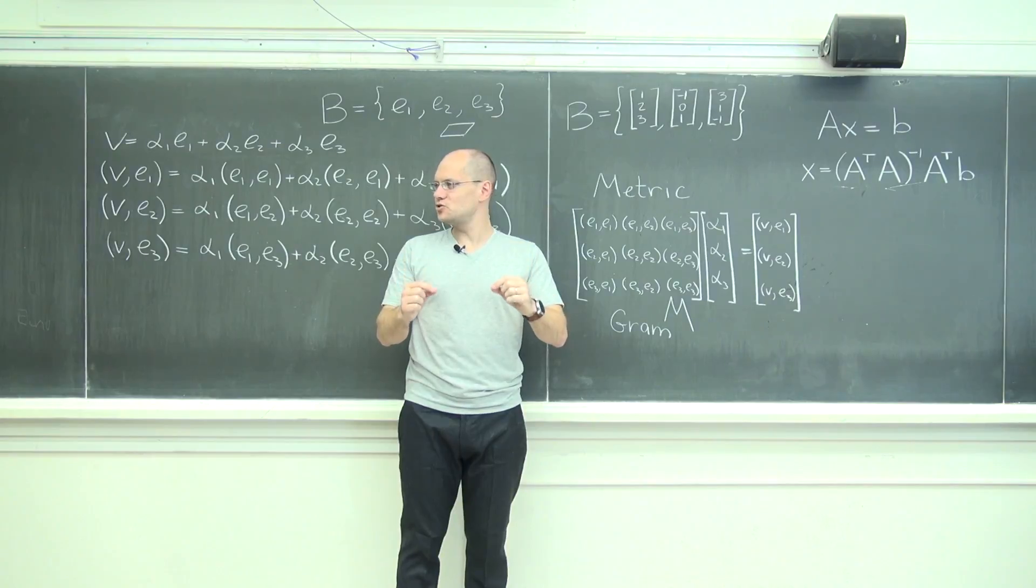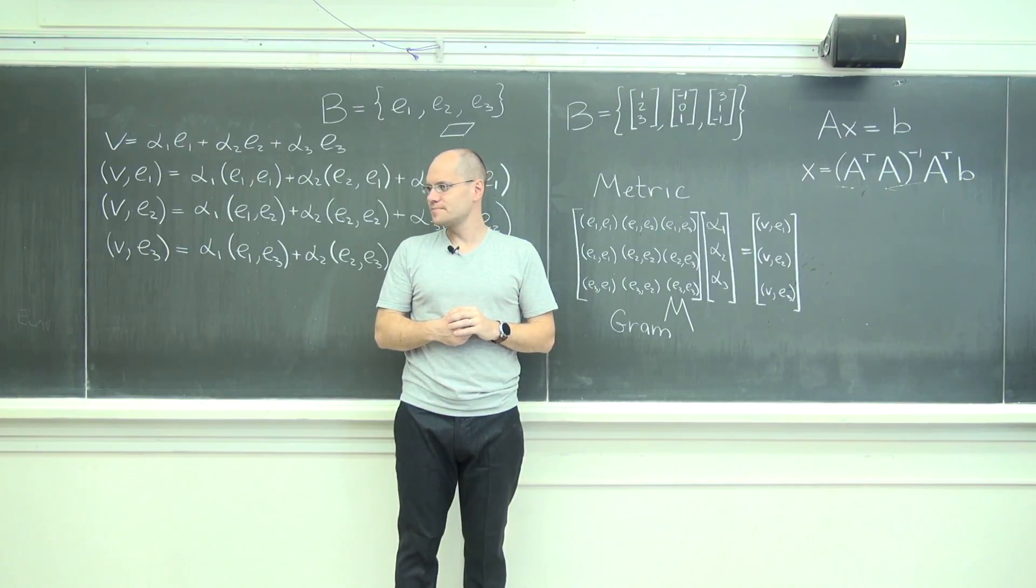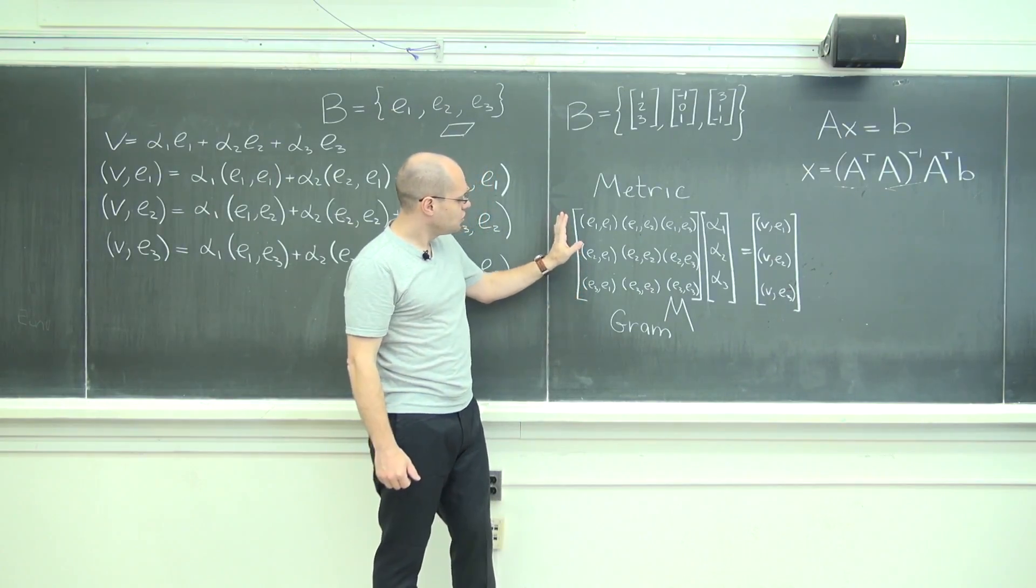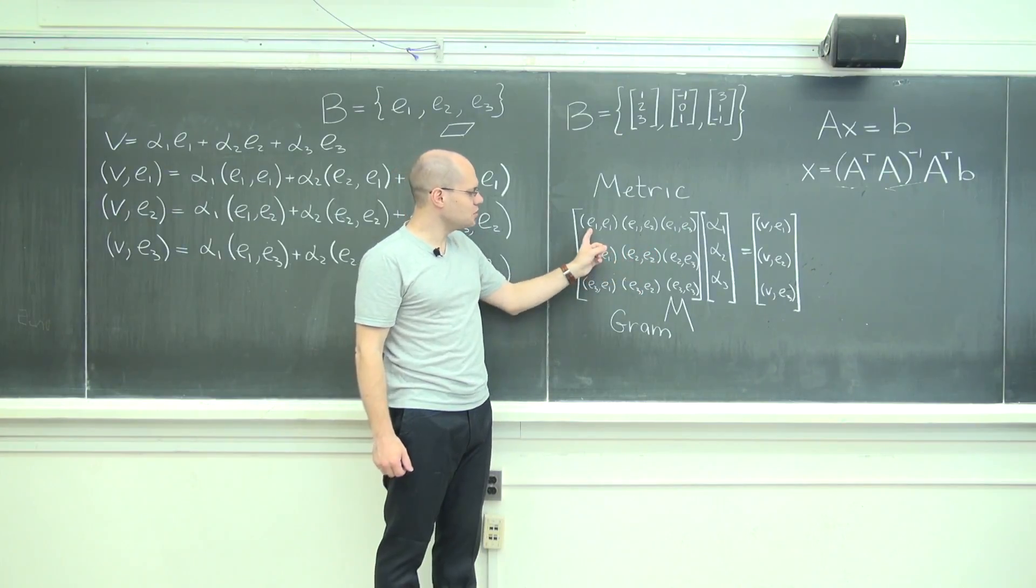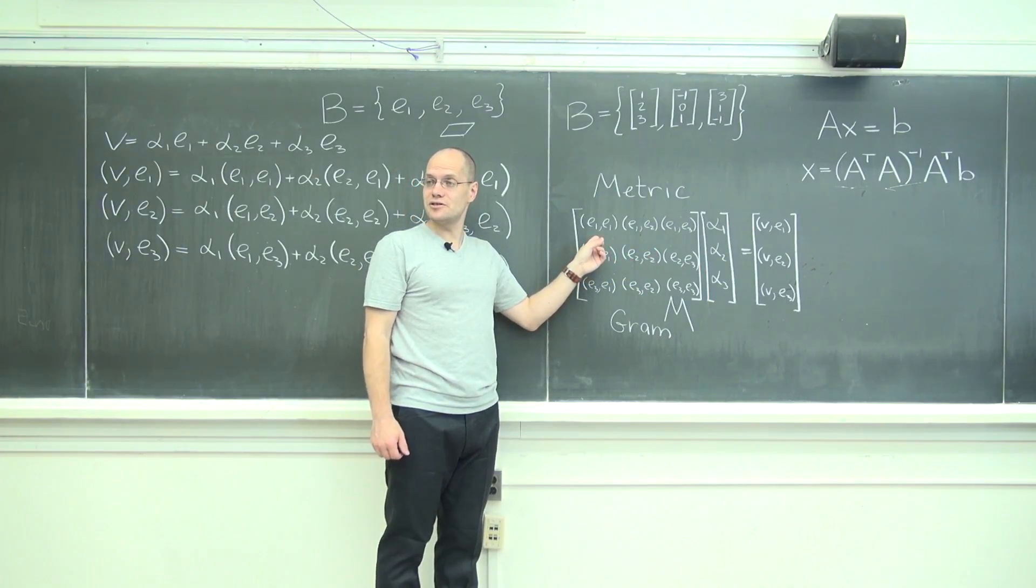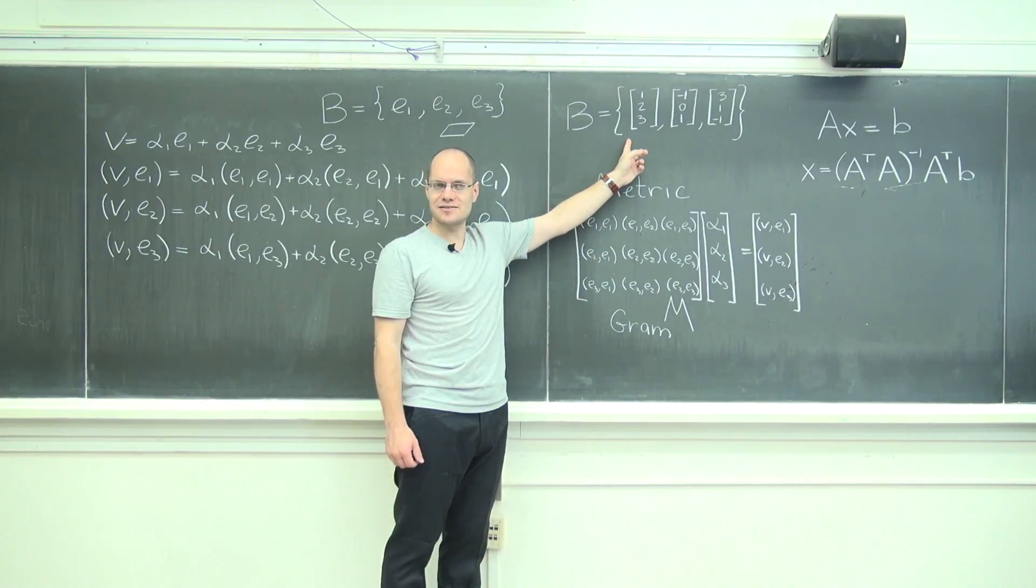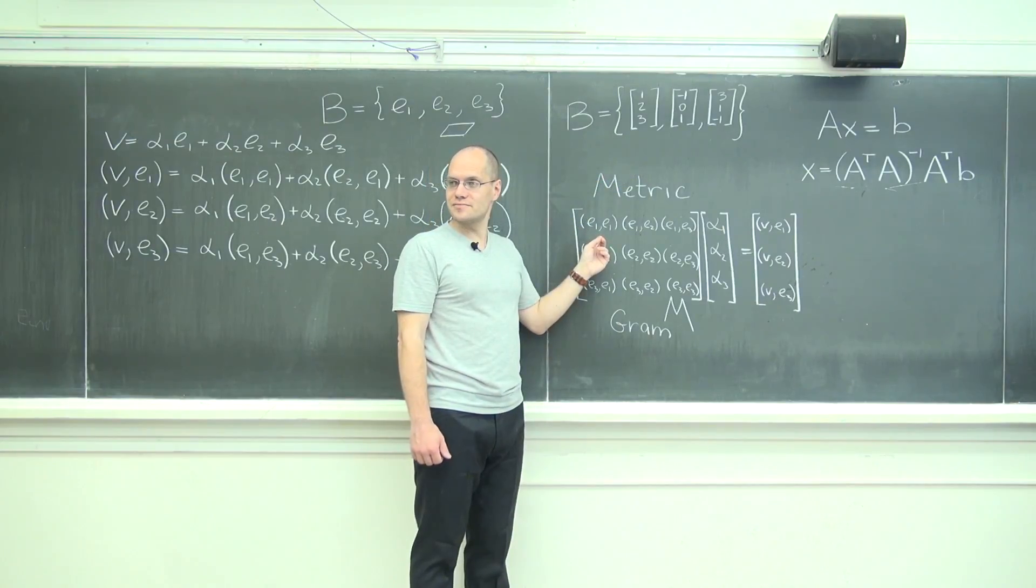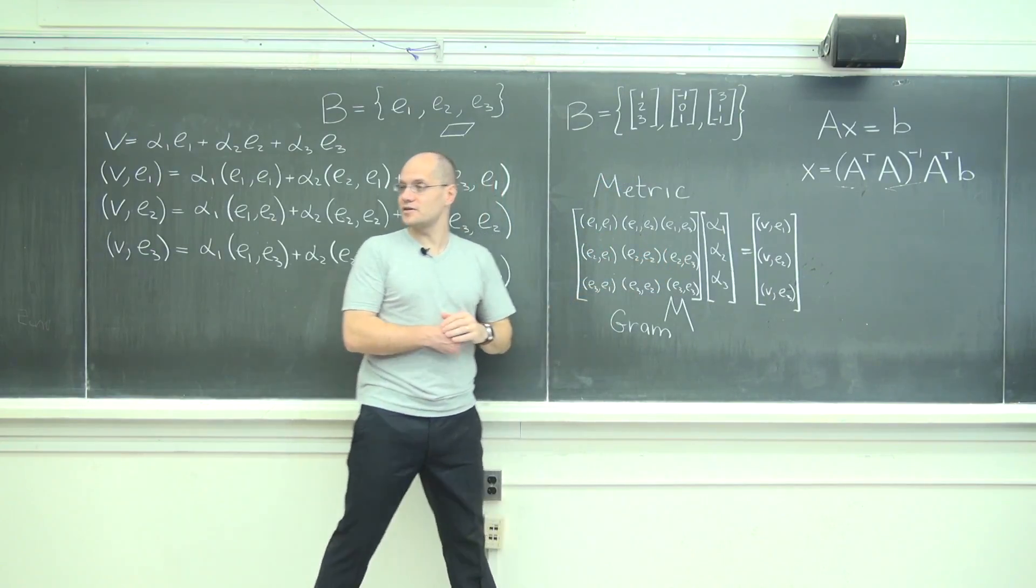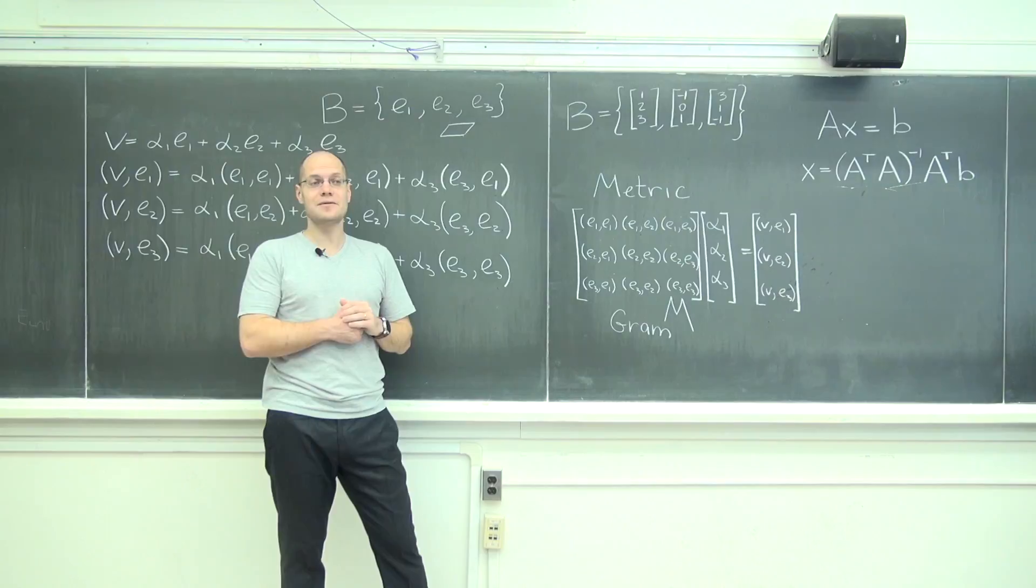a₁·b₁ plus a₂·b₂ plus a₃·b₃. And then what would this matrix be? What would be the top left entry for the inner product matrix when the basis is this and the inner product is the standard inner product? 14. And you could calculate all the other entries, right? I completely agree.